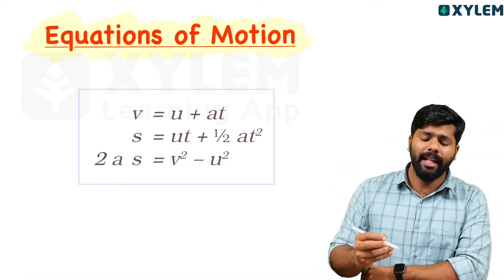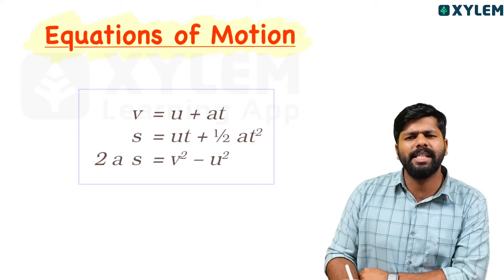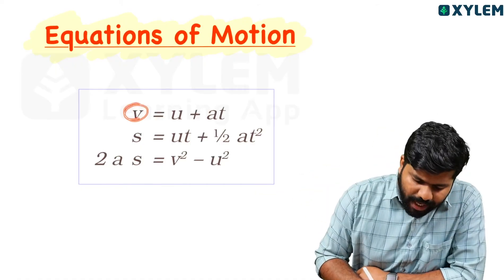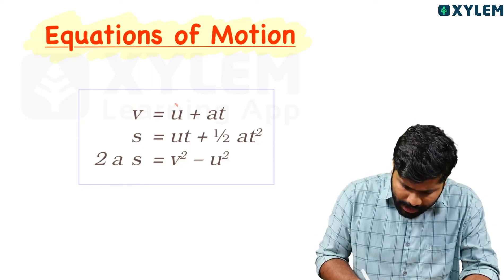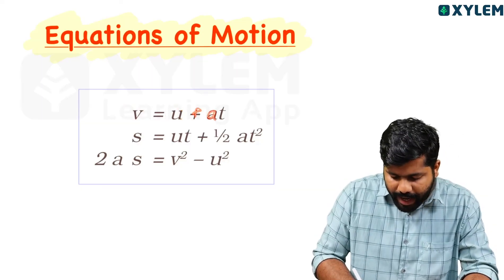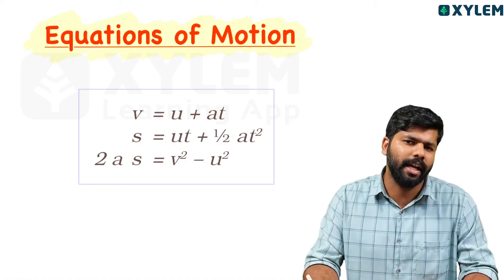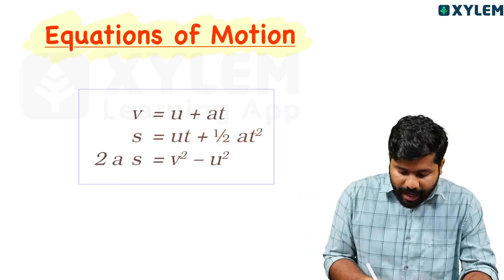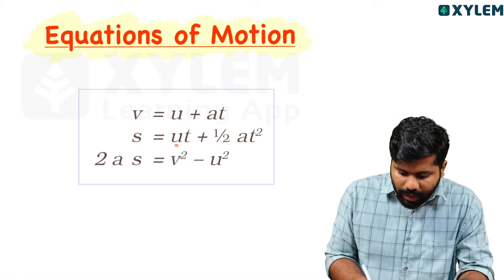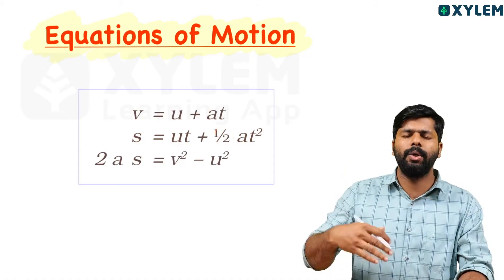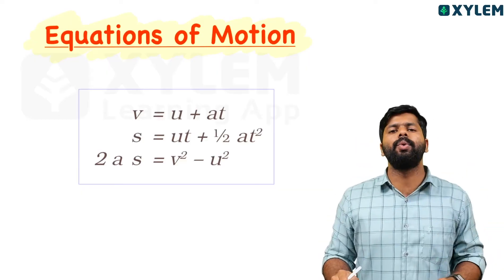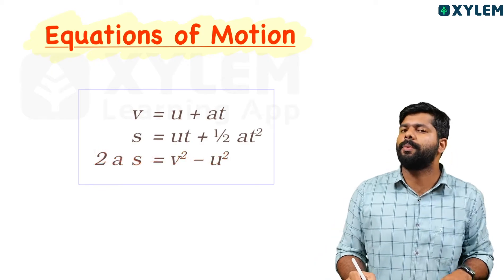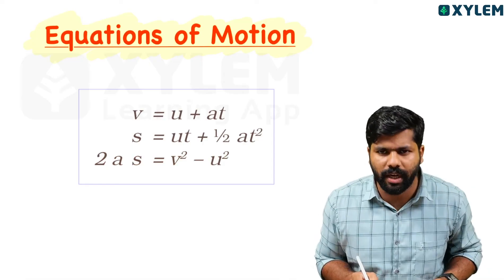Let's go through the three equations of motion. The first equation: v is equal to u plus a times t, where v is the final velocity and u is the initial velocity. The second equation: s is equal to u·t plus half a·t², where s is the displacement. The third equation: 2a·s is equal to v² minus u².